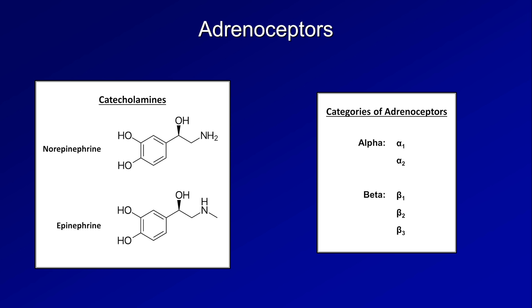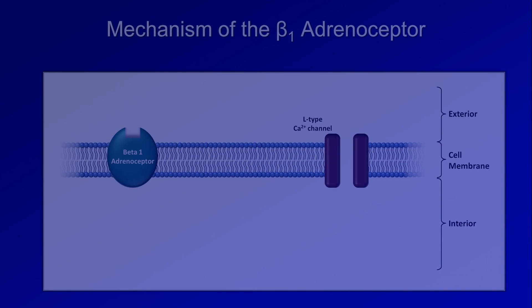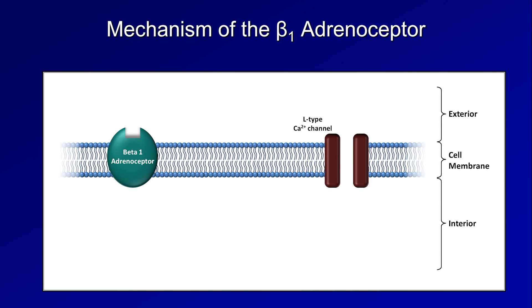Here's the membrane of a cardiac myocyte, with a beta-1 receptor sitting here, which is coupled to something called a G-protein. G-proteins are a large family of proteins, so named because they all bind the guanine nucleotides GDP and GTP. This particular G-protein of interest here is the so-called stimulatory G-protein, so it gets a little subscript S.